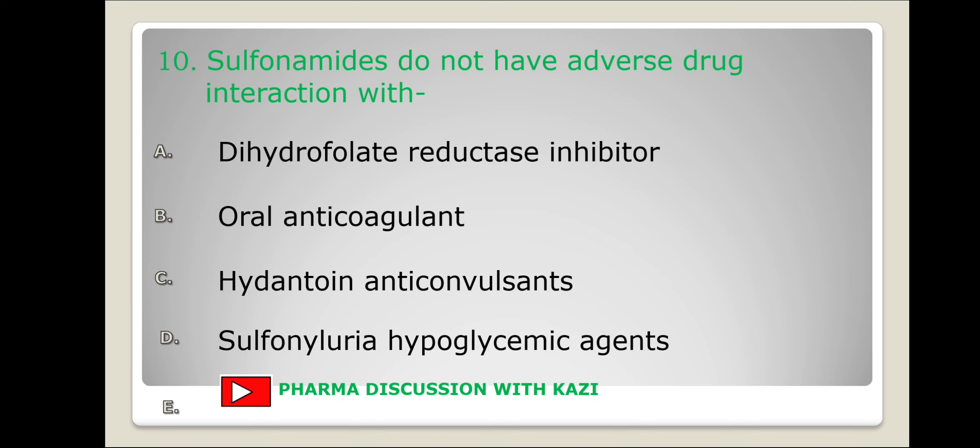In the fourth case, co-administration may increase the half-life of sulfonyl urea and hypoglycemia may occur, as sulfonamides impair hepatic metabolism of sulfonyl urea or alter their protein binding. So the correct answer is A — dihydrofolate reductase inhibitor.